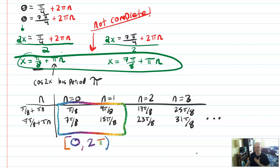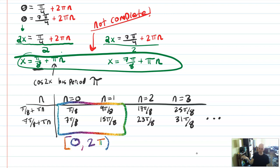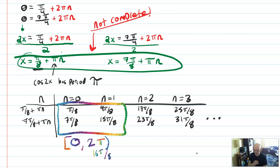I personally like thinking about the graph to help me here. The graph is going twice as fast, so I had two solutions originally but now I have four because the graph is going twice as fast. That's how I know to list out four solutions. You can also check numerically — 2π is 16π over 8, so if you get any solutions greater than 16π over 8, you know to stop.